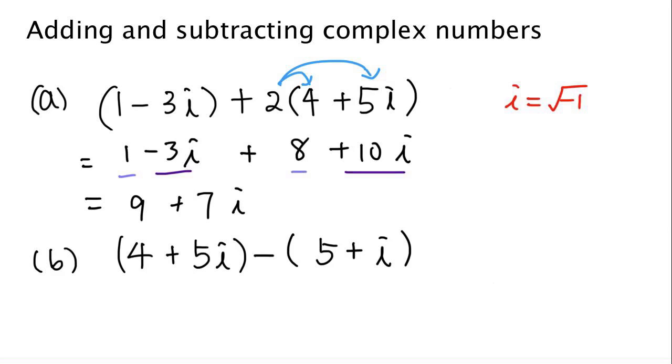Let's look at the second example. 4 plus 5i, and we are subtracting 5 plus i. Now we can distribute the negative sign and get minus 5 and minus i. Then 4 minus 5 is negative 1. 5i minus i is plus 4i.